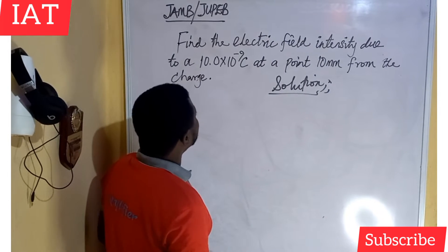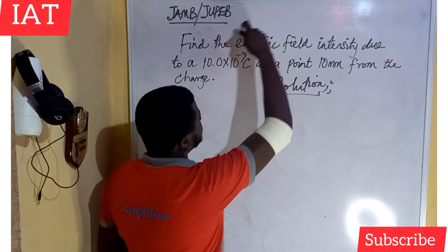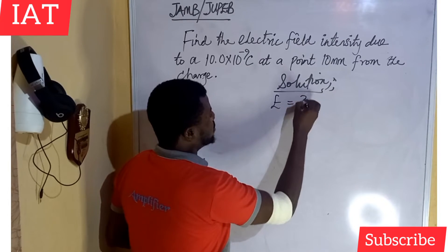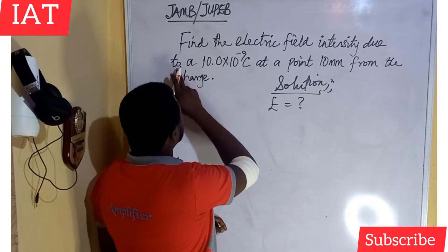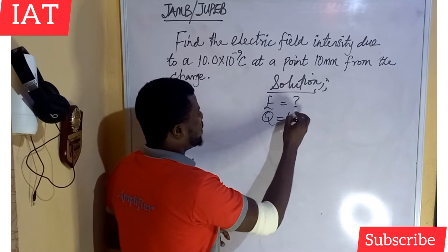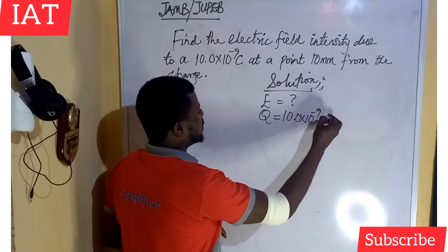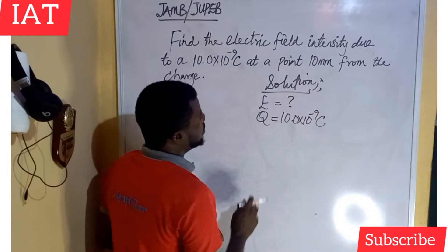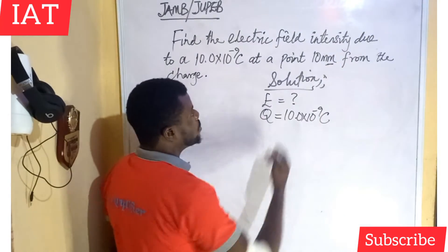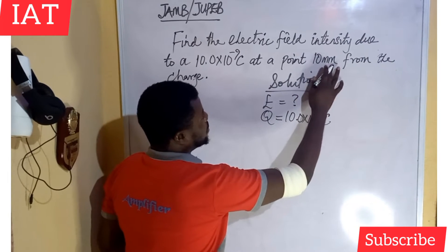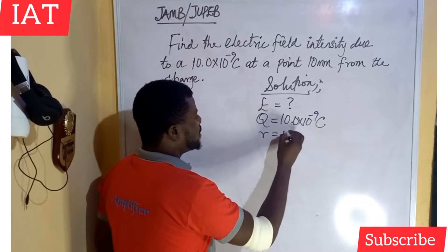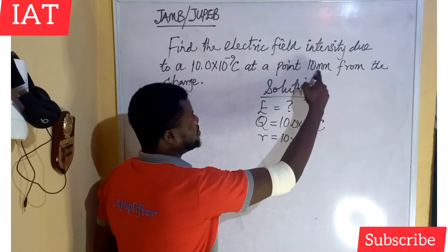The first thing we need to do is fetch out the parameters necessary to figure out this problem. We use the symbol E to represent electric field intensity. The charge Q is 10.0 times 10 to the power of minus nine coulombs, and the distance r is 10 millimeters, which means 10 times 10 to the power of minus three meters.